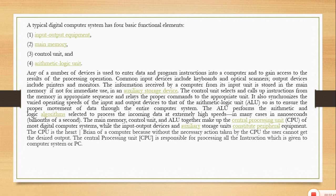Any number of devices that can be used to enter data or program instructions into the computer are the input devices. These input devices include keyboard, optical scanner, and the mouse. The output devices give out the result of the data which has been processed by the central processing unit, and include the printer and the monitor. The main work done by the computer is inside the central processing unit.